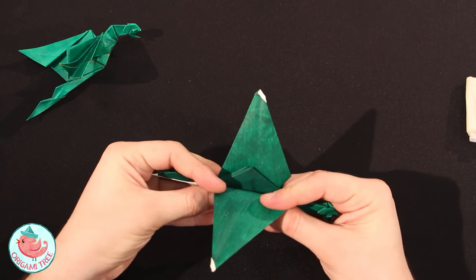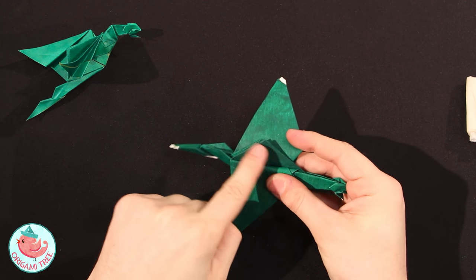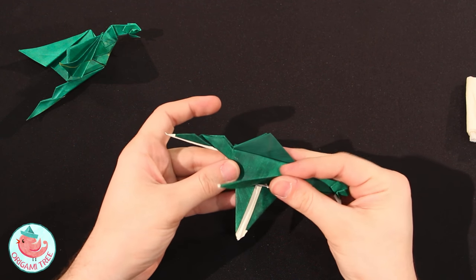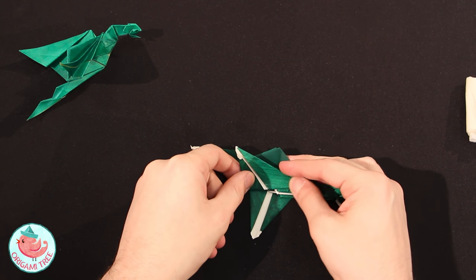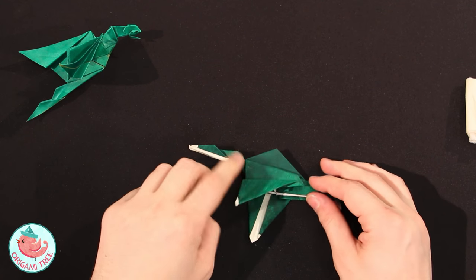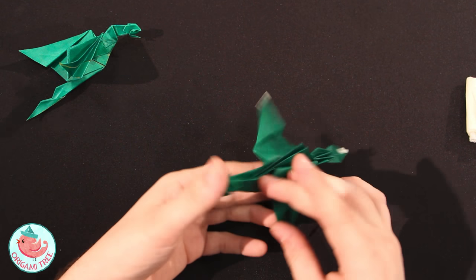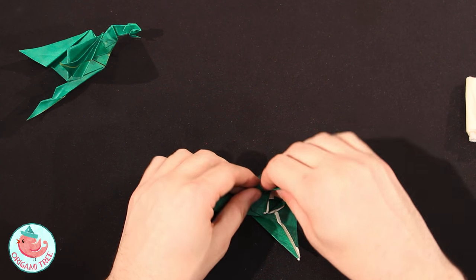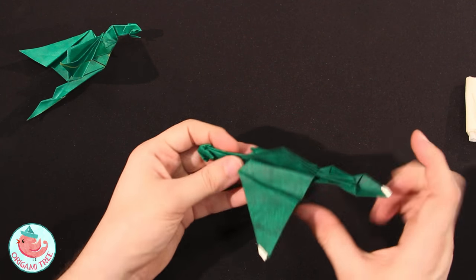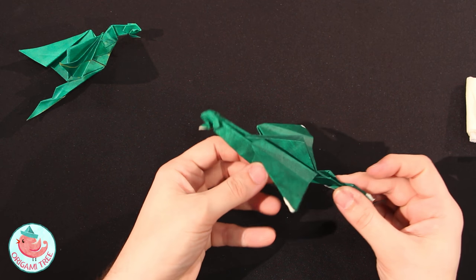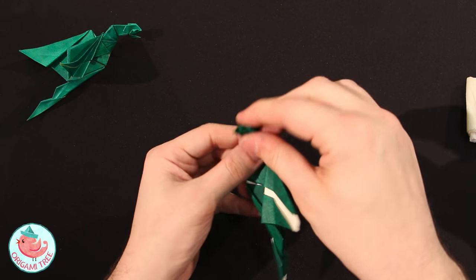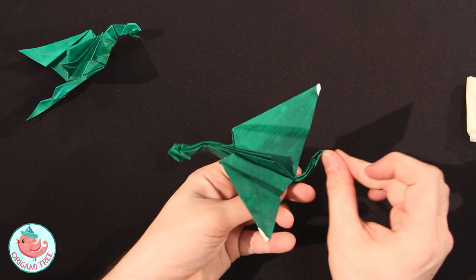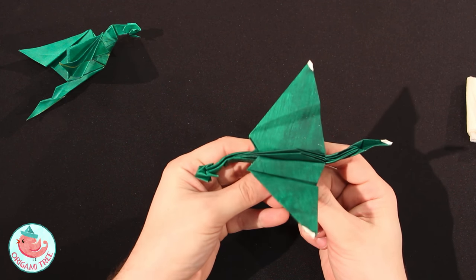Now all we have left to do is our wings. We'll fold our wings down. Again revealing the last set of razors here. And we're going to make a little pleat in the wing. Fold up and then fold back down. And do the same on the back. Now we just have to finish shaping our dragon. We're going to give the neck a little twist, give it a little motion. Give the tail a little twist in the opposite direction. Give it a little motion. And there you have a finished razorback dragon.